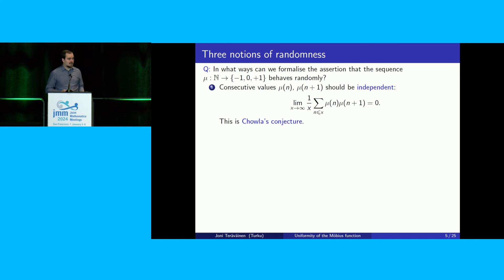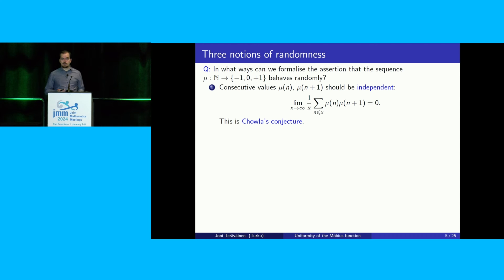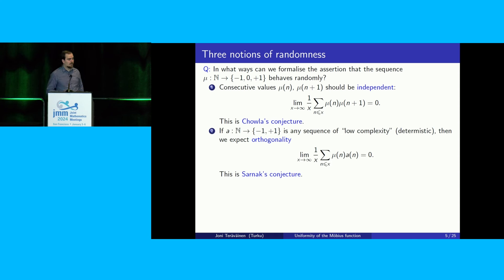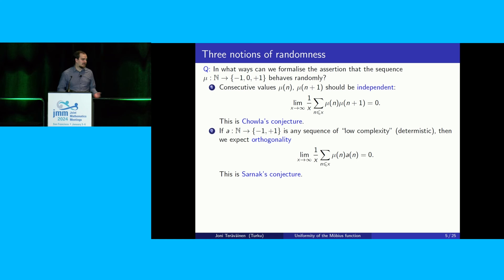The first way to say that your sequence is random, if it takes values plus 1 and 0, would be to say that the value at point n and the value at point n plus 1 should be independent — your sequence sort of forgets its own history. In other words, if you look at the correlation of mu of n and mu of n plus 1, this should converge to 0 as x goes to infinity. This is known as Chowla's conjecture.